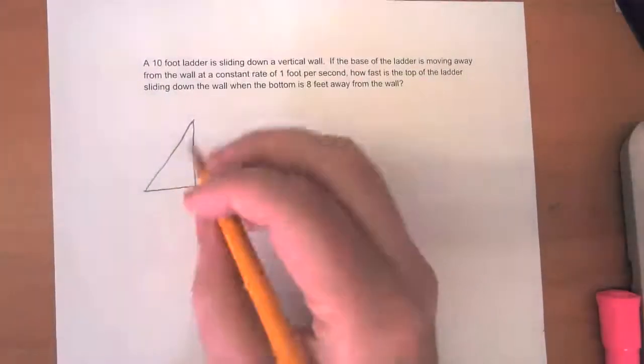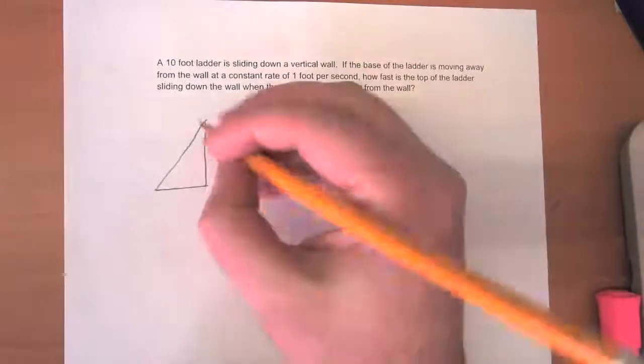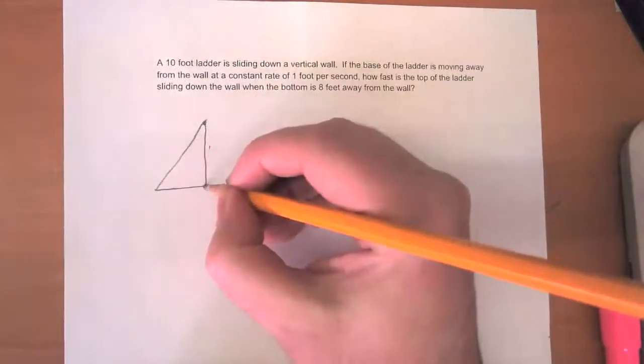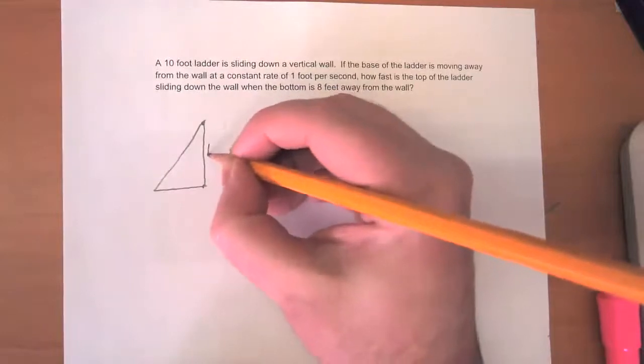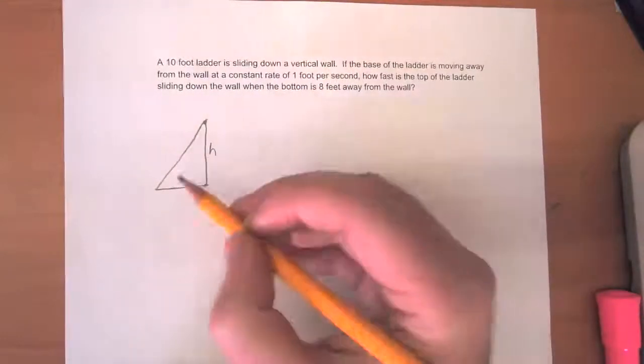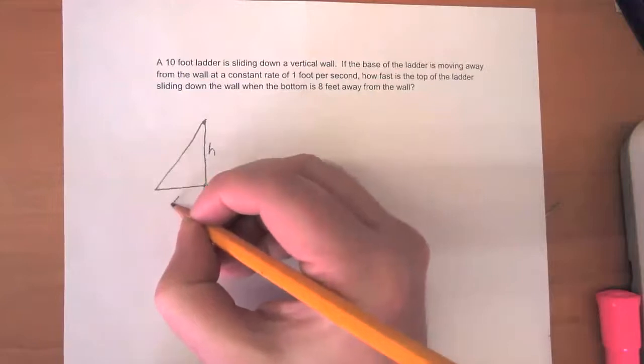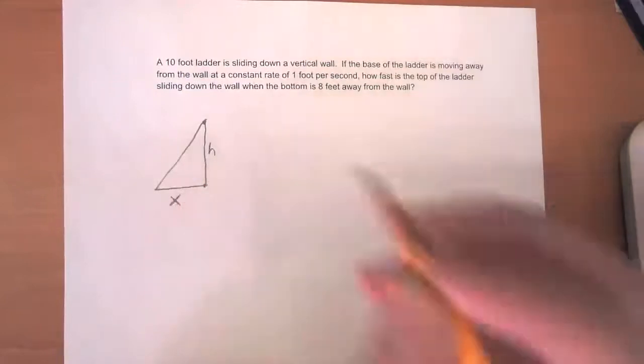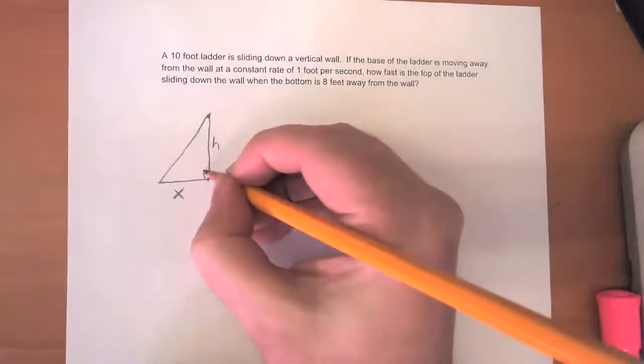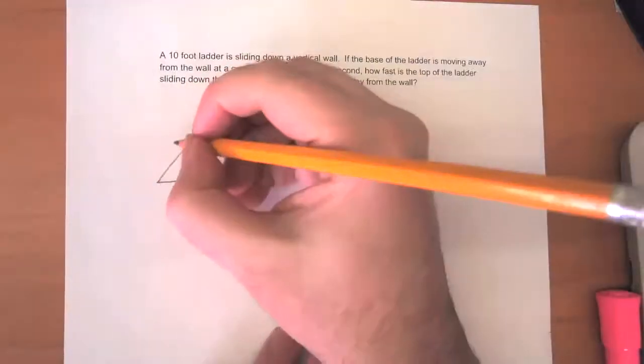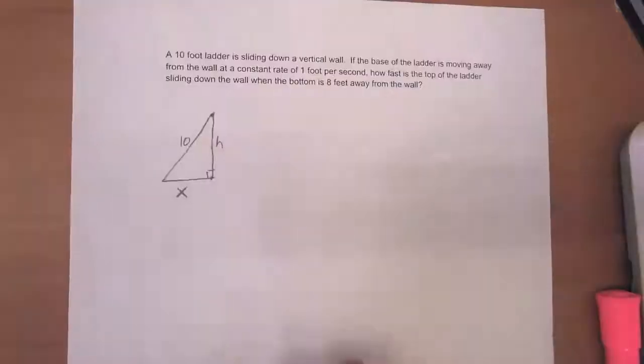And there are two things changing as that happens. There's the distance from the top of the ladder to the bottom of the wall, and I'll call that H. And there's the distance from the bottom of the ladder to the corner of the wall, and I'll call that X. And that's a right angle because this is a well-designed room, and we know that the ladder is 10 feet long.